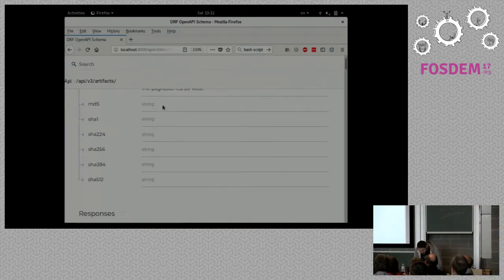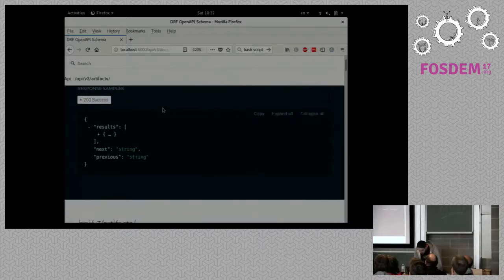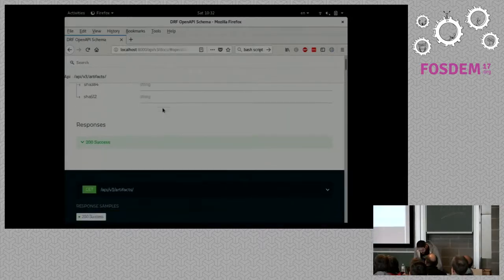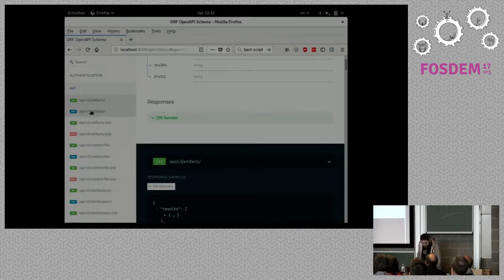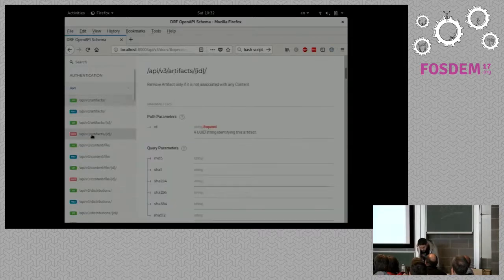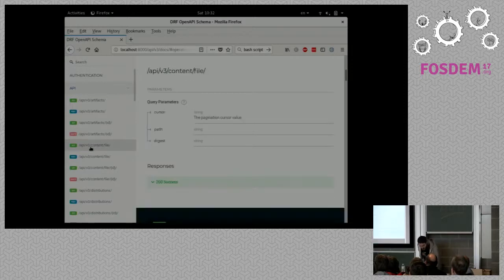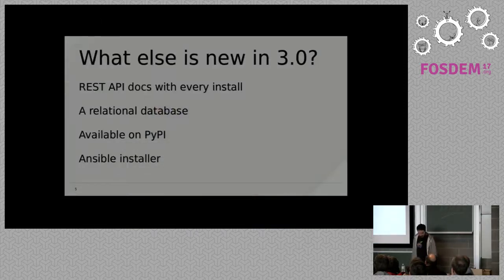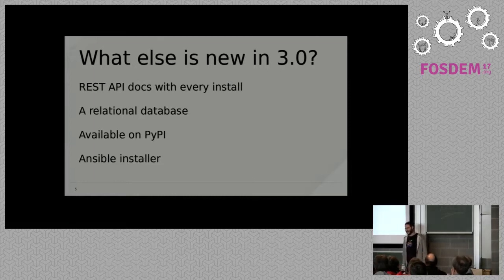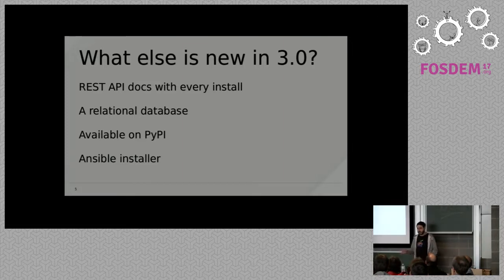Let me zoom out a bit. For every resource and endpoint on your Pulp 3 installation you can just go to API v3 docs and look up the documentation. We also dropped Mongo, and I am so glad that we did. We're now using a relational database which can do joins instead of having to use Python for that.